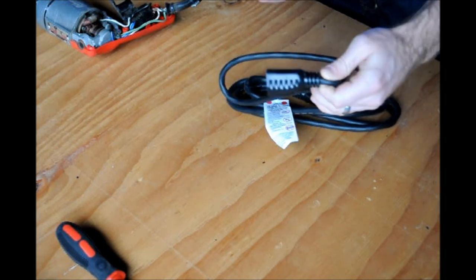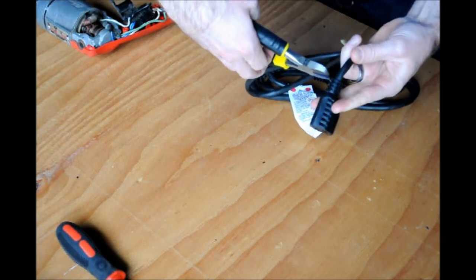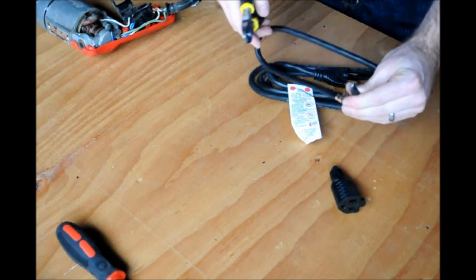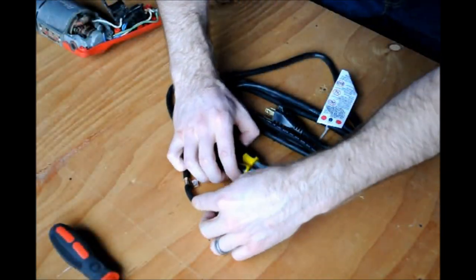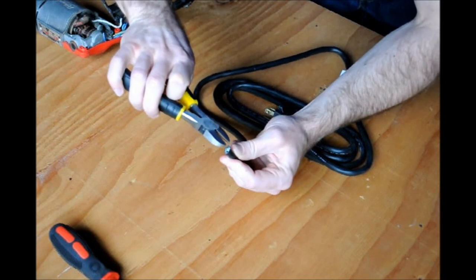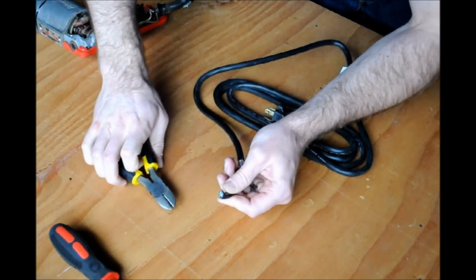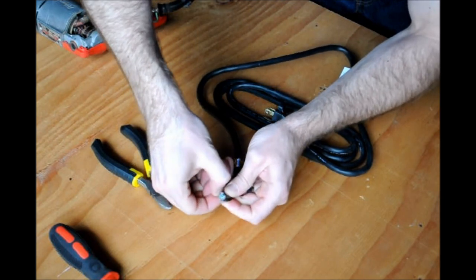Cut off the female end of the extension cord. Cut down the outer insulation to expose the wires. Cut down far enough for the wires to reach their contact points, and cut off the unneeded insulation.